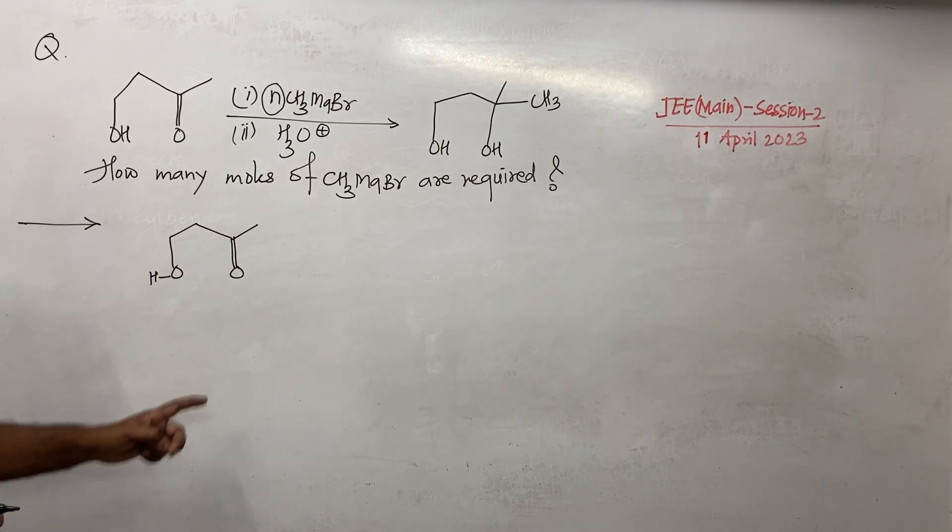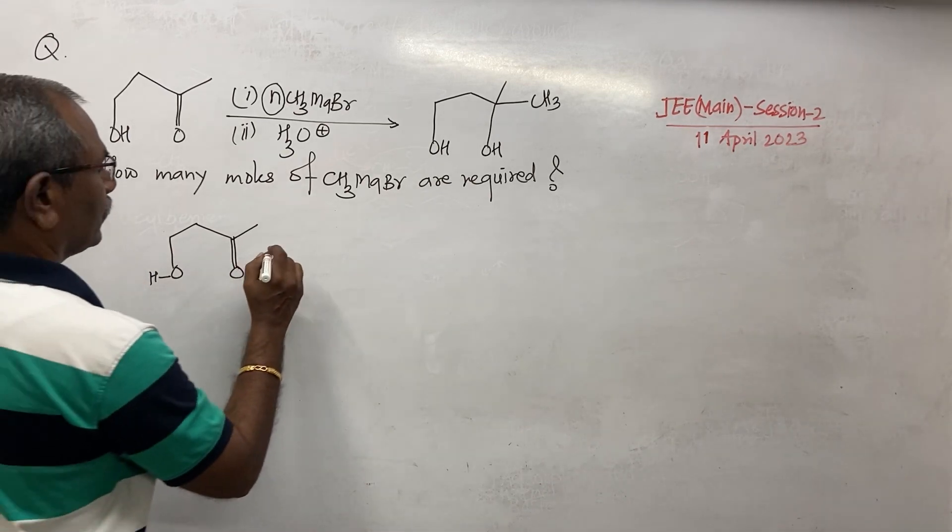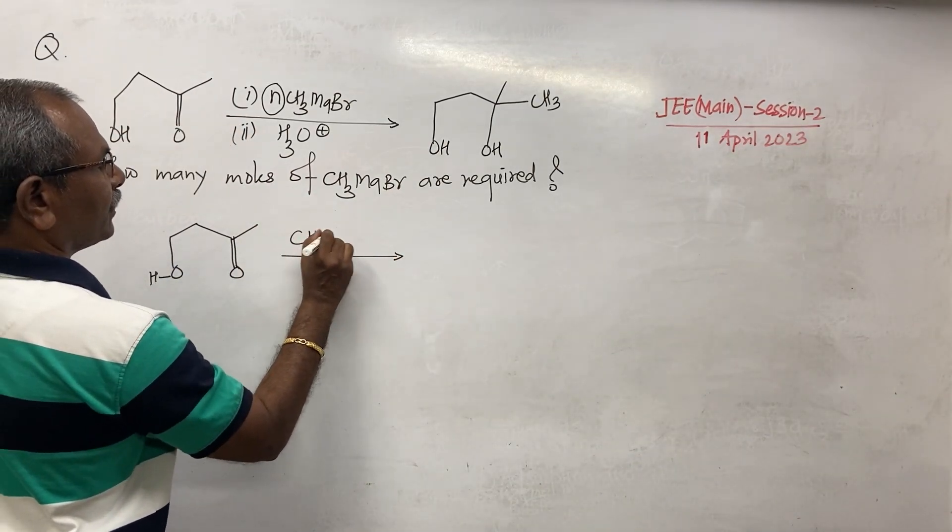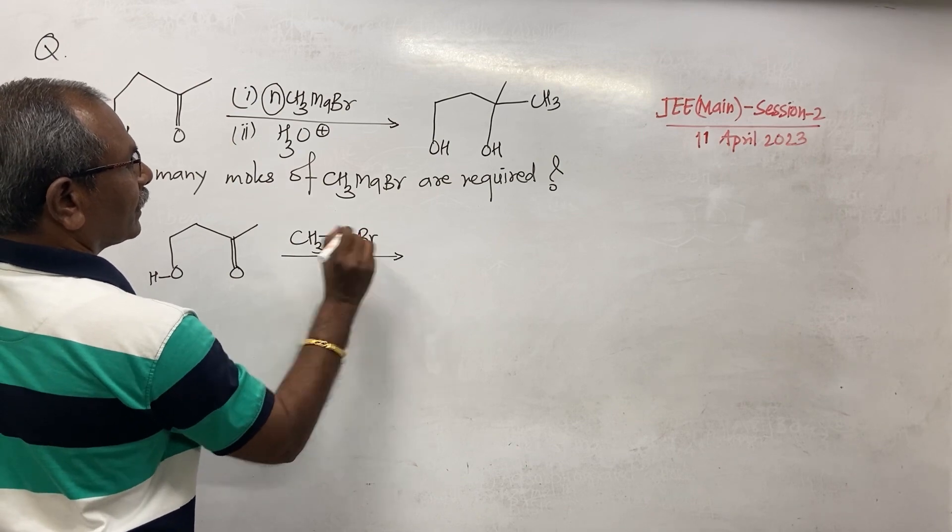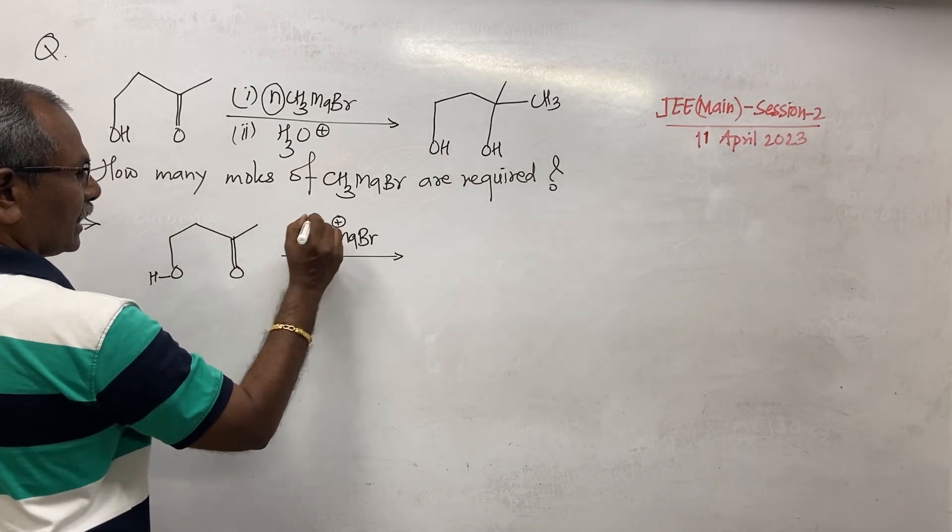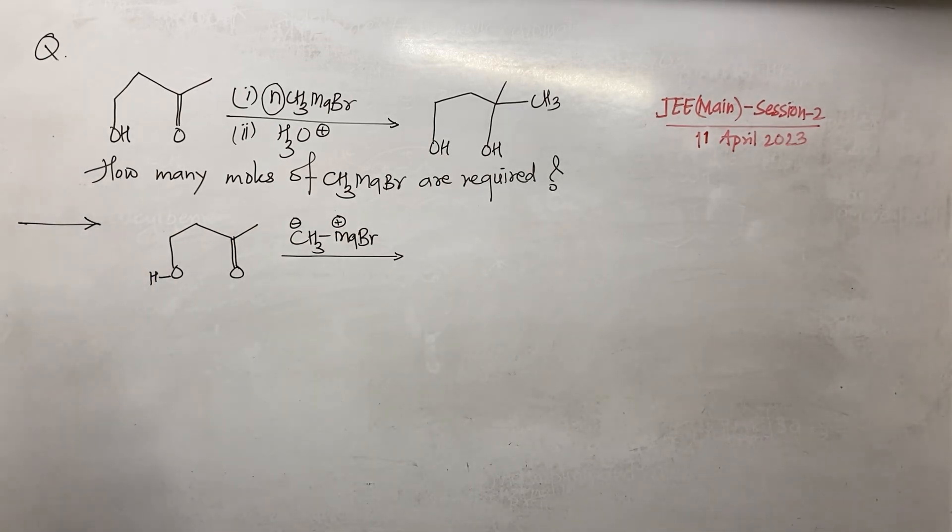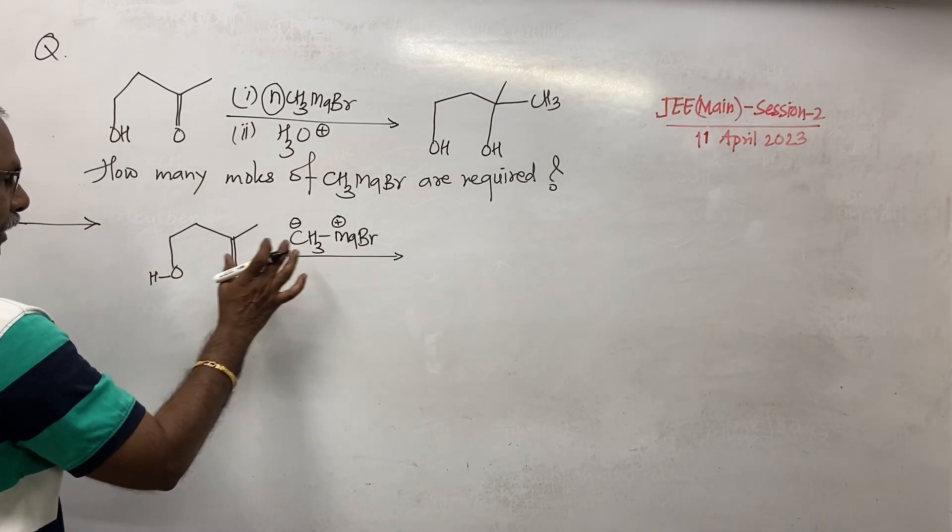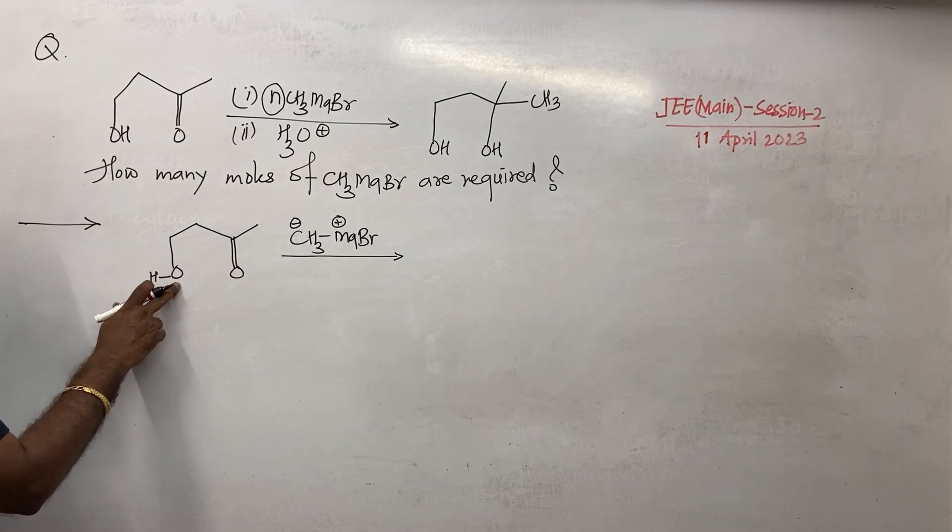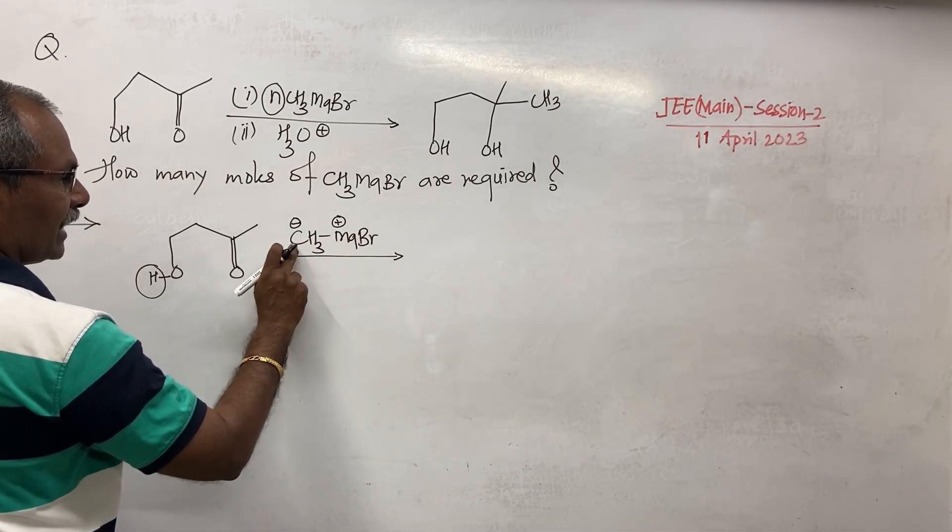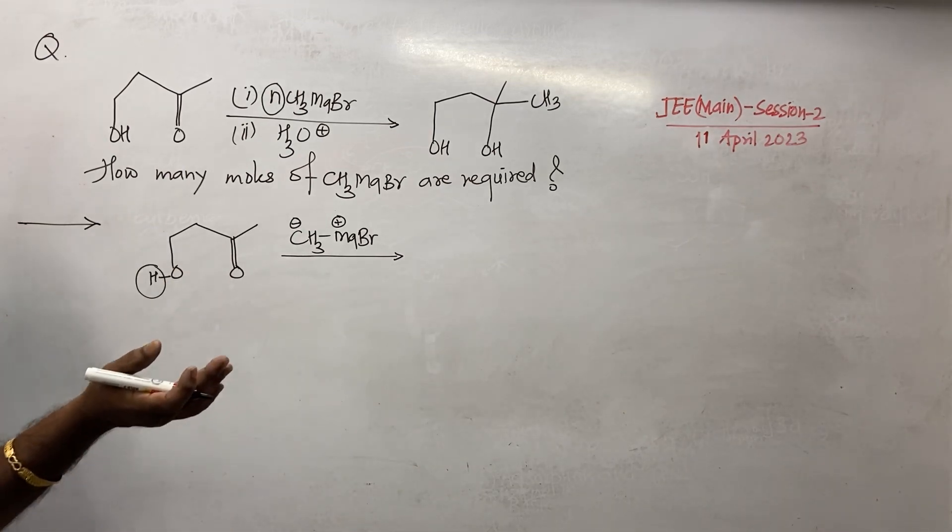This is the OH group, this is the ketonic group. Here suppose 1 mole CH3MgBr is added. You know that this magnesium carries positive charge and carbon of alkyl group carries negative charge. And this Grignard reagent reacts with H of alcohol. So this hydrogen atom is replaced by MgBr and this CH3 combines with H to form methane.